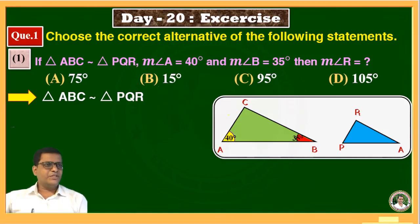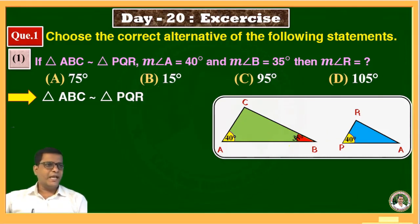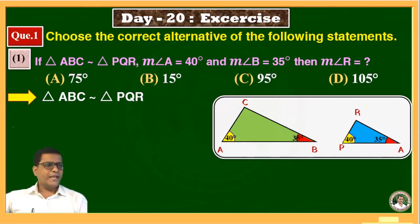We know that if these two triangles are similar, then corresponding angles are congruent. Therefore, angle A is equal to angle P, which is 40 degrees. And angle B is equal to angle Q, which is 35 degrees. Then we want to find the remaining angle, that is angle R.